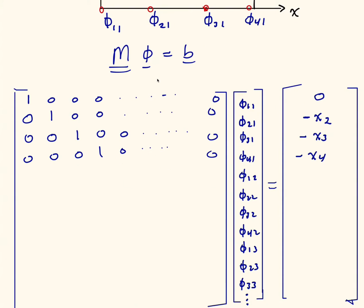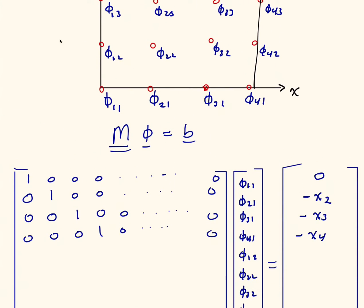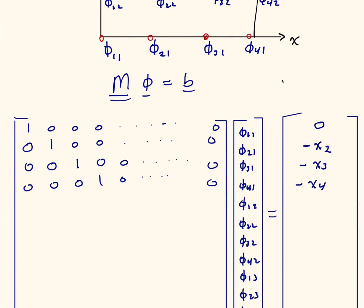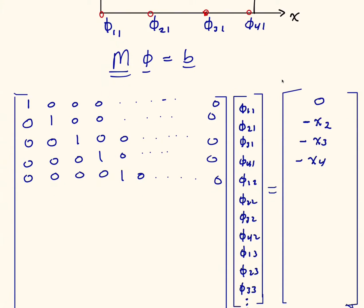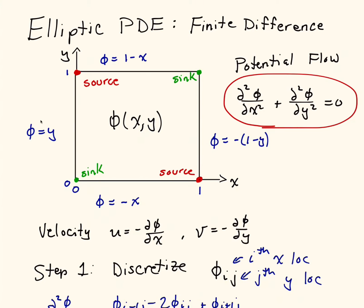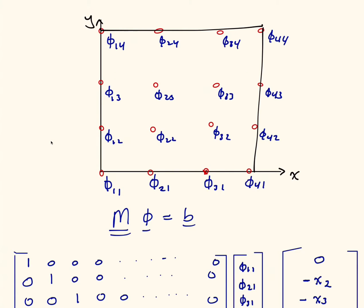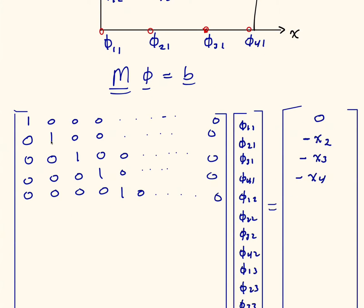Phi_(1,2) exists on the left boundary, so it's also a boundary condition. We put a 1 on the diagonal and 0s across the rest of the row. The boundary condition on the left-hand side is y, and since we're now at the second y position, the right-hand side is y_2.